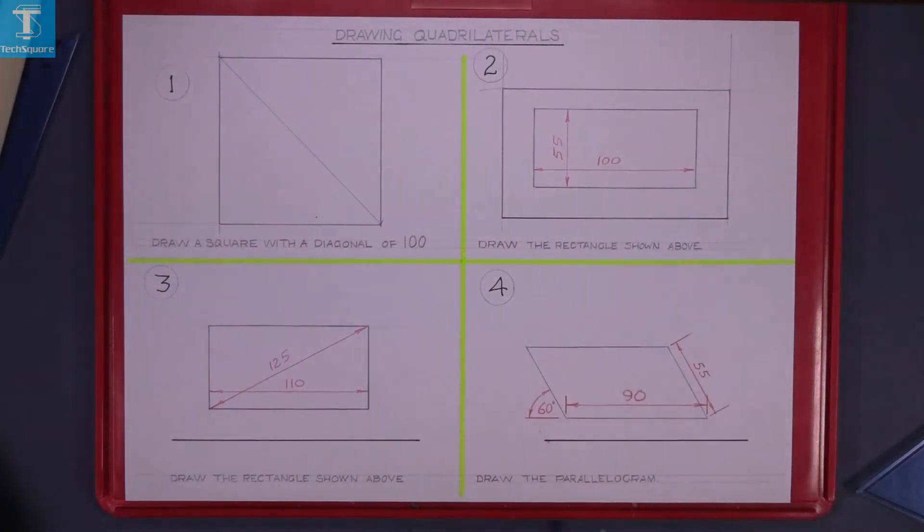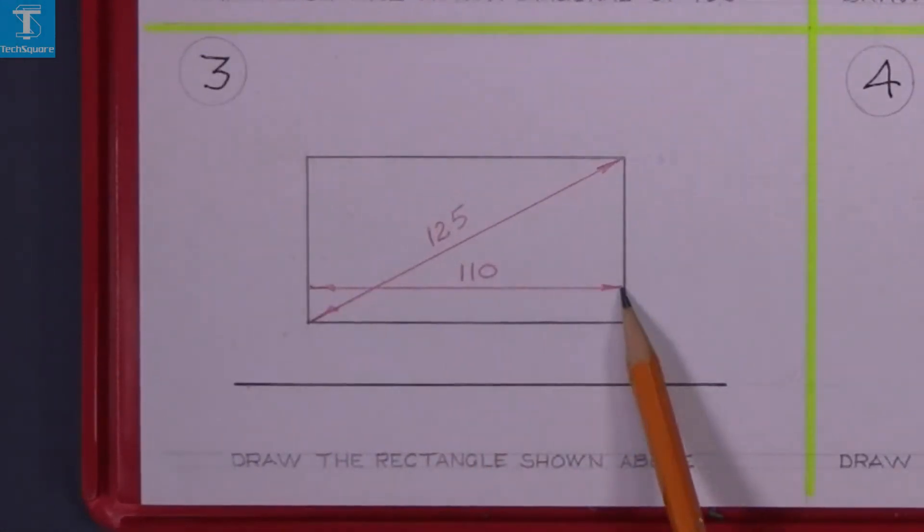Now we are going on to question 3. In this case it is another rectangle. We have 110 base but with a diagonal of 125.